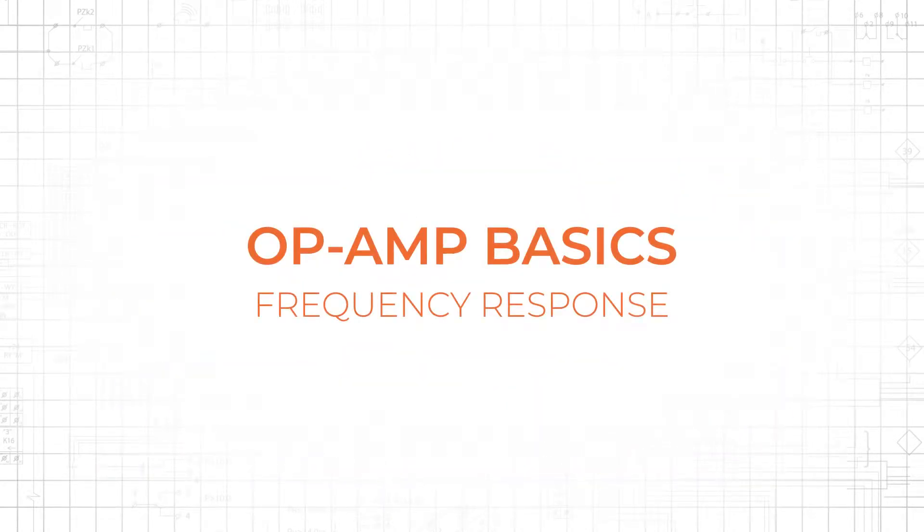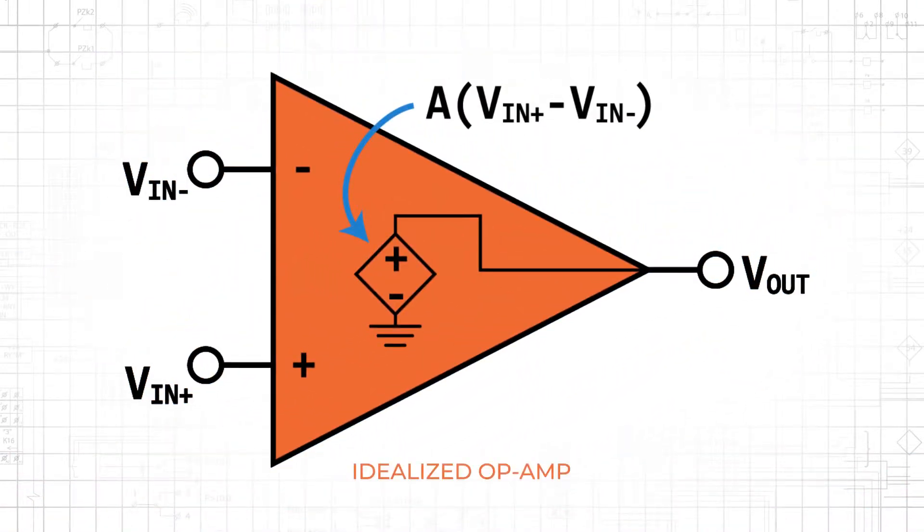The idealized op-amp has no frequency-dependent elements, and its behavior is not affected by the frequency of the input signal. That is to say, it has infinite bandwidth. This works for low-gain, low-frequency systems.